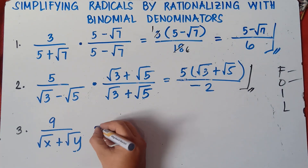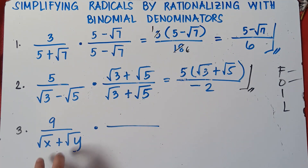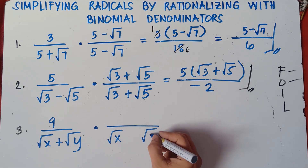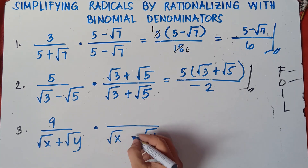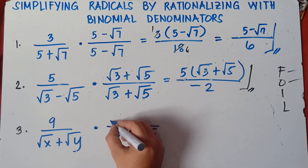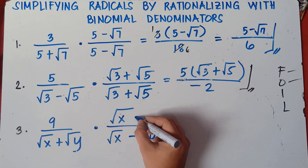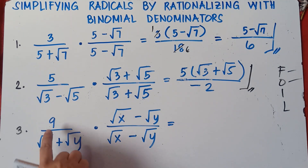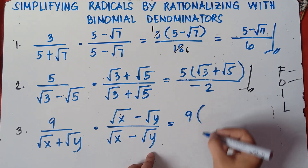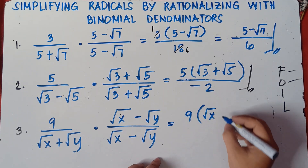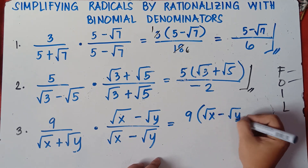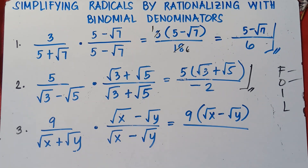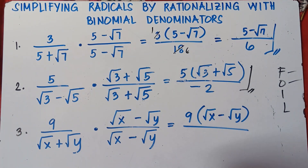Let's try number 3. We multiply by the conjugate of the denominator (square root of x plus square root of y), which is square root of x minus square root of y. The numerator becomes 9 times (square root of x minus square root of y). On the denominator, we apply the FOIL method to (square root of x plus square root of y) times (square root of x minus square root of y).